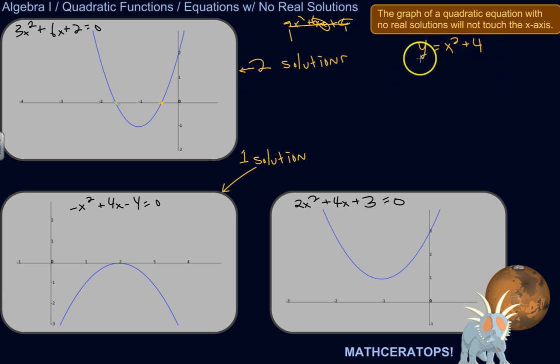Another way to do that is to set y equal to 0, because at this point, at the x-axis, y is 0. So it's finding the values of x so that y is 0.